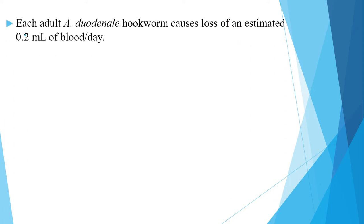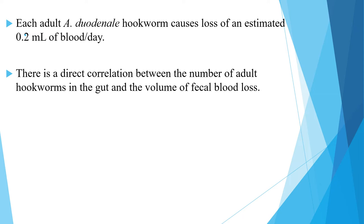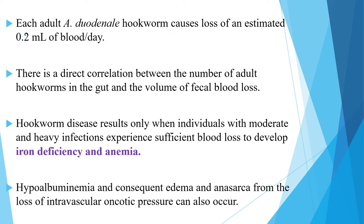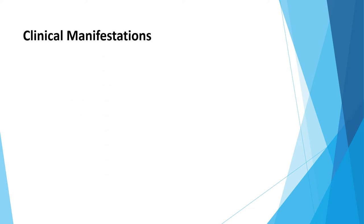Each adult Ancylostoma duodenale causes a loss of an estimated 0.2 ml of blood per day. There is a direct correlation between the number of adult hookworms in the gut and the volume of fecal blood loss. Hookworm disease results only when individuals with moderate and heavy infections experience sufficient blood loss to develop iron deficiency, anemia, hypoalbuminemia, and consequent edema and anasarca from loss of intravascular oncotic pressure.